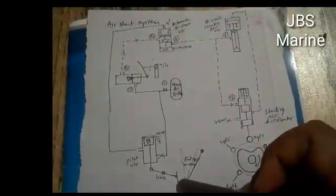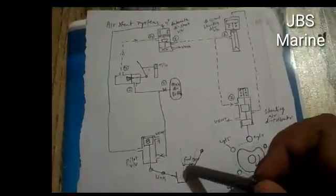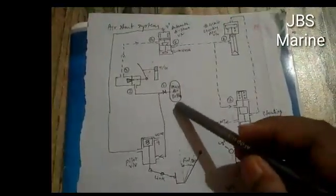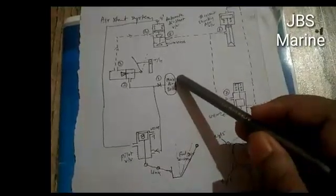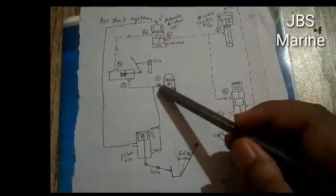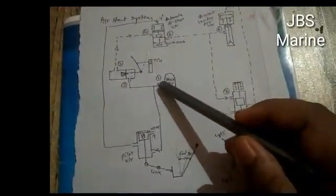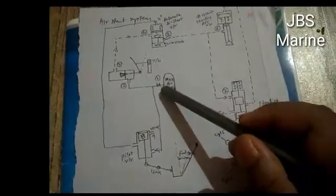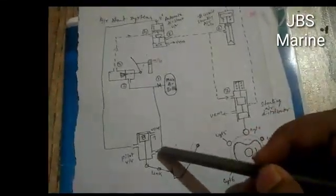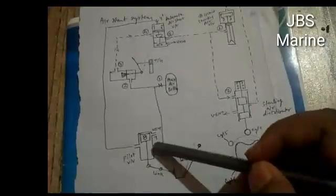So what happens here, in brief I will discuss the main concept. From the main air bottle, when valve 1 is opened, the 30 bar air pressure comes here on the pilot valve.